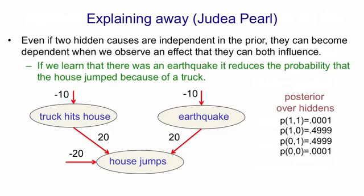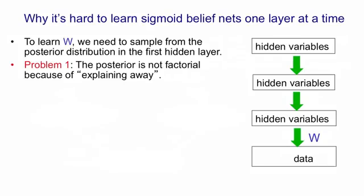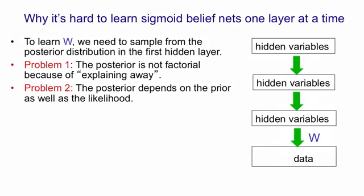Now that we've understood explaining away, let's go back to the issue of learning a deep sigmoid belief net. So we're going to have multiple layers of hidden variables. They're going to give rise to some data in our causal model. And we want to learn those weights W between the first layer of hidden variables and the data. First of all, the posterior distribution over the first layer of hidden variables is not going to be factorial. They're not independent in the posterior. And that's because of explaining away. So even if we just had that layer of hidden variables, once we've seen the data, they wouldn't be independent of one another. But because we have higher layers of hidden variables, they're not even independent in the prior.